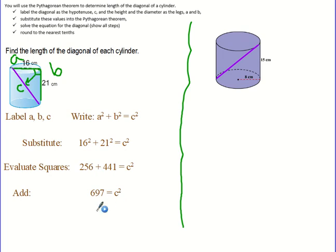Now I'm going to take the square root of both sides. So the square root of 697 and the square root of C squared. When I take the square root of C squared I just get C and the square root of 697 I get approximately 26.4. So the length of that diagonal would be 26.4 centimeters.